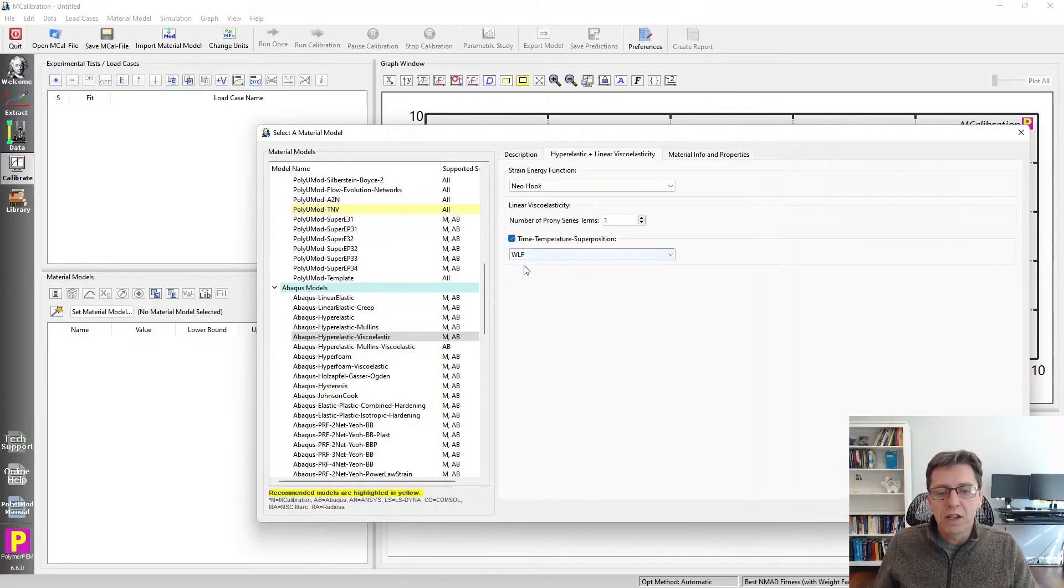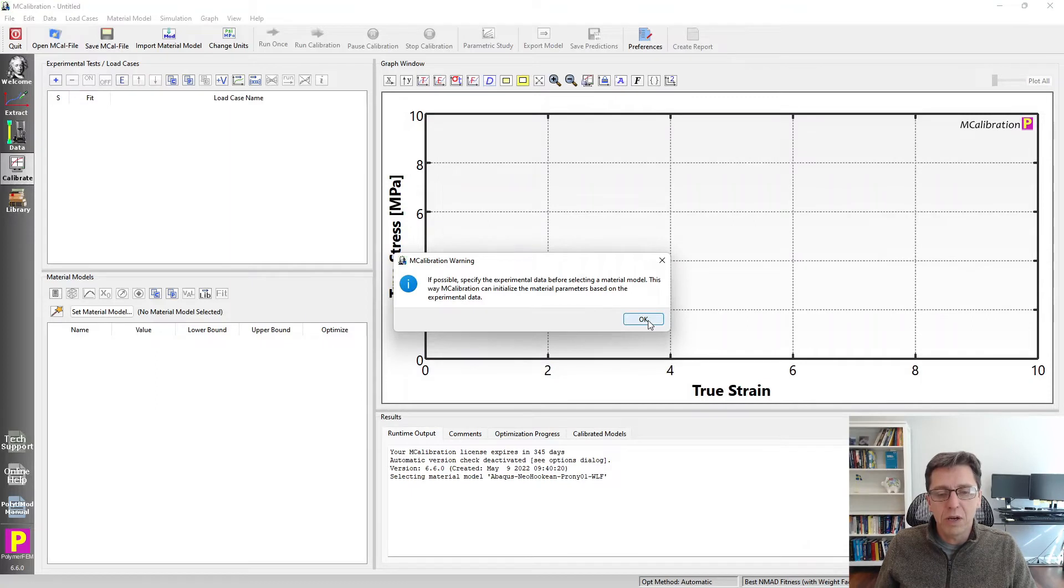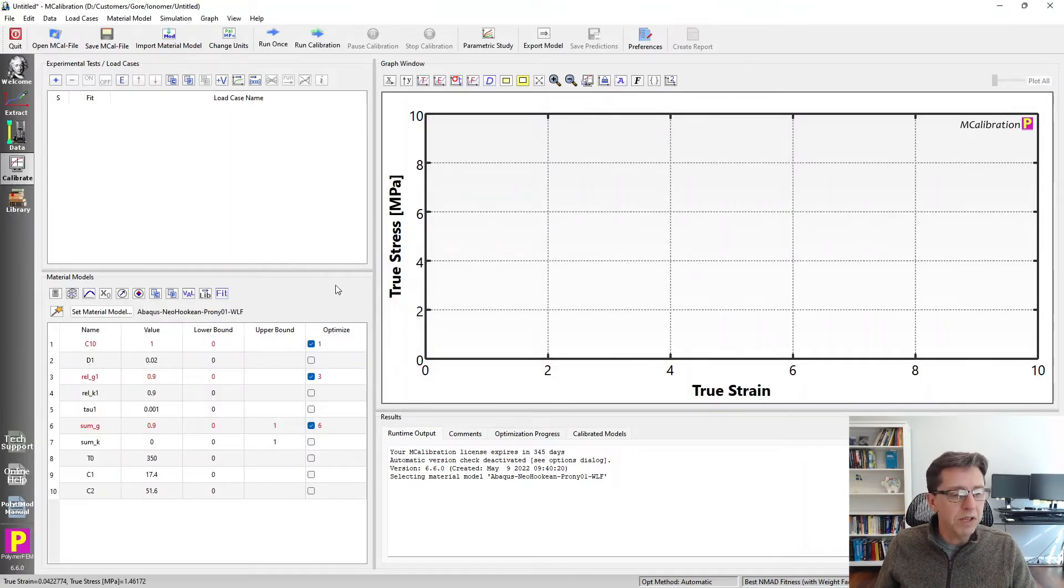But I'm going to activate WLF time temperature superposition in this list here. So I select that one and I get the warning saying, well, you should specify your experimental data first. Well, we don't need to do that in this example. And here it is.